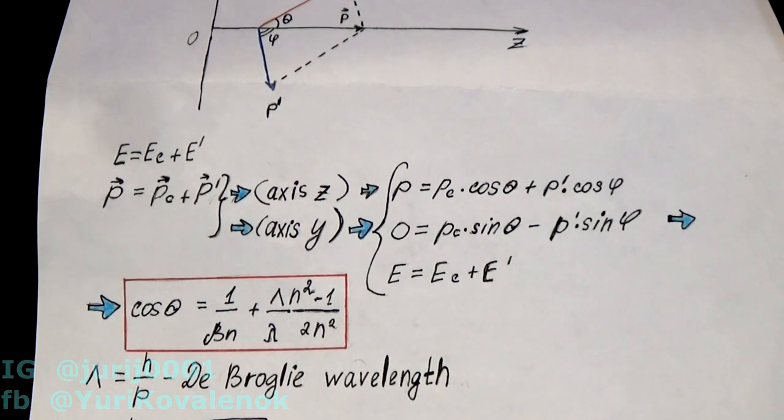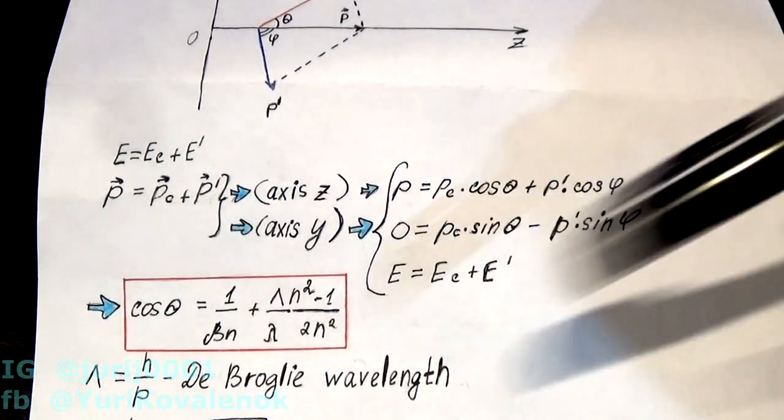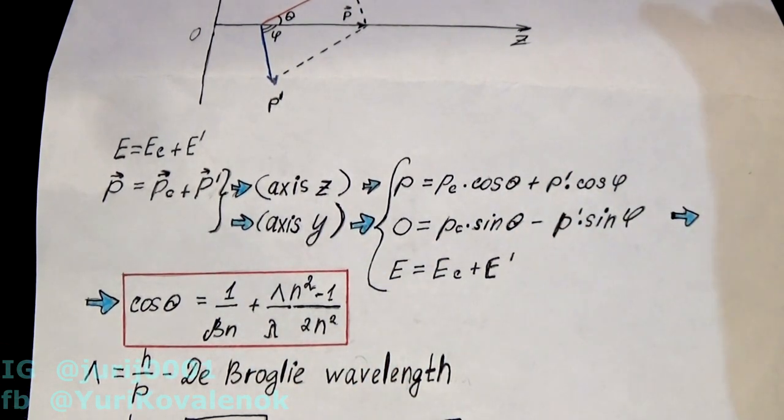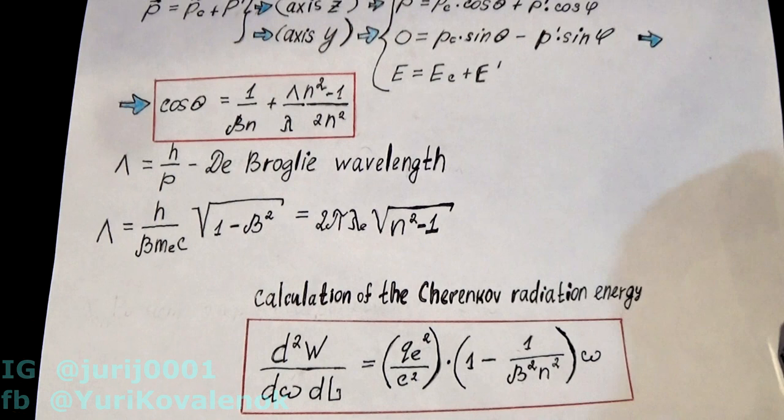So in this system of equations you will get this answer. The second term has a very small value which is comparable to the de Broglie wavelength. You can even find the Cherenkov radiation energy if you use this formula, which will require you to have very good mathematical knowledge.